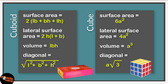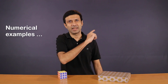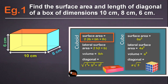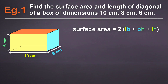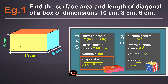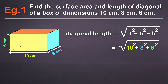Let's look at some examples. Example 1: Find the surface area and length of the diagonal of a box of dimensions 10 cm, 8 cm and 6 cm. Using the surface area formula 2(LB + BH + LH) and substituting the values, we get 376 cm². For the diagonal, using √(L² + B² + H²) and plugging in the values, we get 10√2 cm.